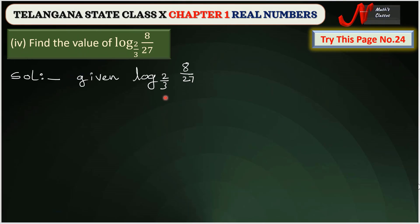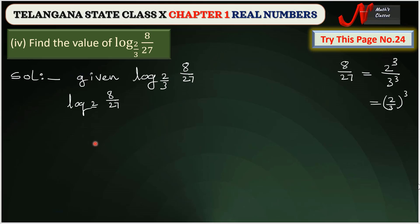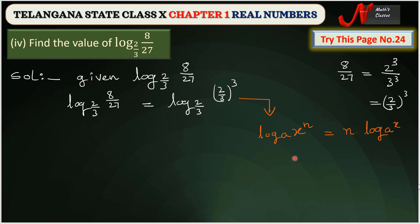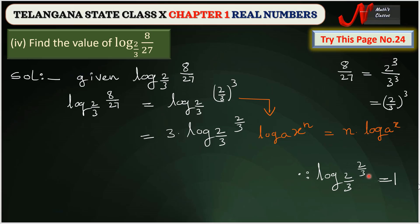Next, find the value of log (8/27) base (2/3). We write 8/27 as (2/3)^3, so log (8/27) base (2/3) equals log (2/3)^3 base (2/3). Using the power rule, we write 3 times log (2/3) base (2/3). Since log (2/3) base (2/3) equals 1, we get 3 times 1, so log (8/27) base (2/3) equals 3.